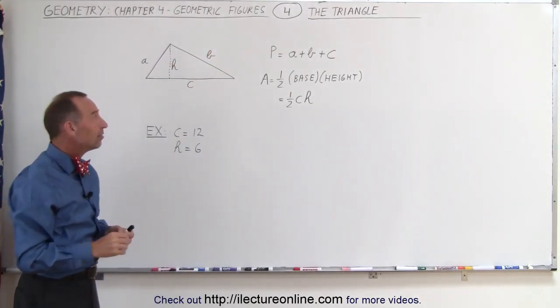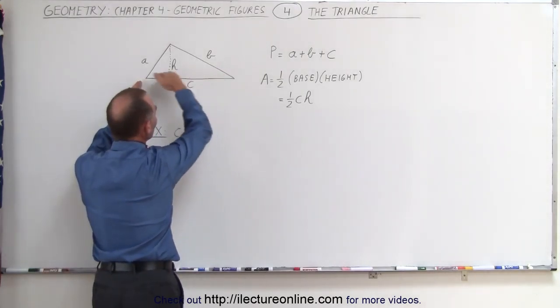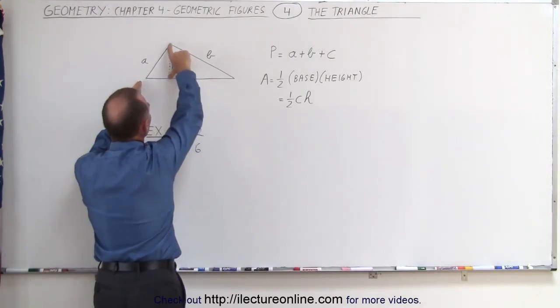To find the area it is equal to half the length of the base, which is the side which is at the bottom of the triangle, times the height.